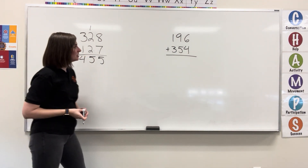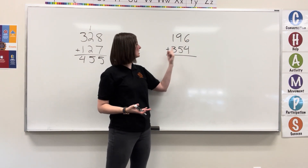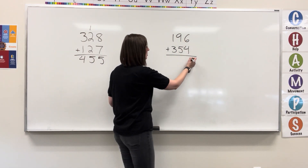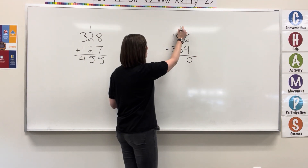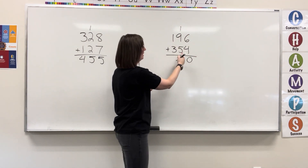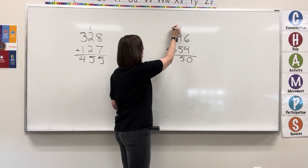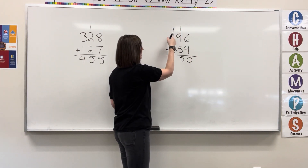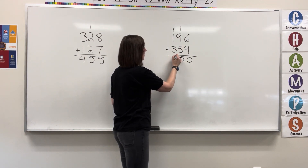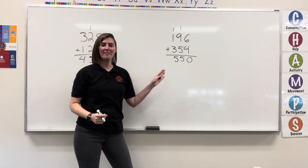Moving on to our next example. Again, starting in the ones column, I have 6 plus 4. That equals 10. Write the 0, carry the 1. 1 plus 9 equals 10, plus 5 equals 15. Write the 5, carry the 1. 1 plus 1 equals 2, plus 3 equals 5. Write the 5. Our answer here, 550.